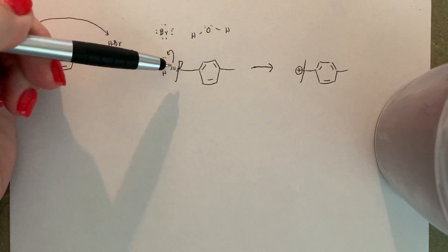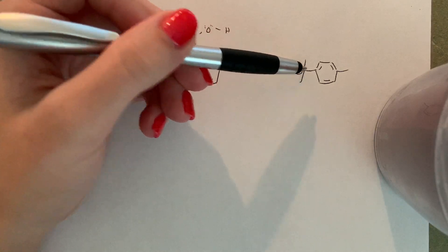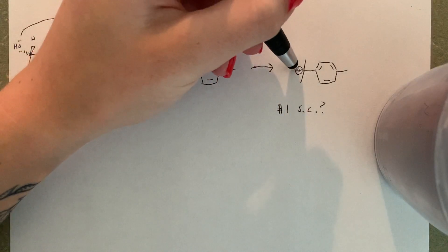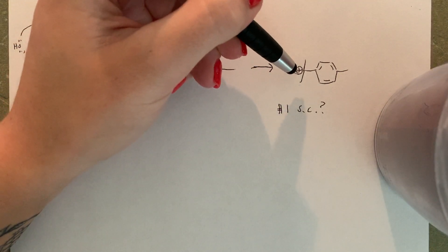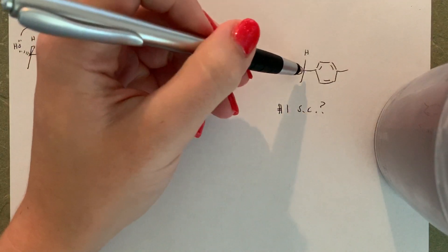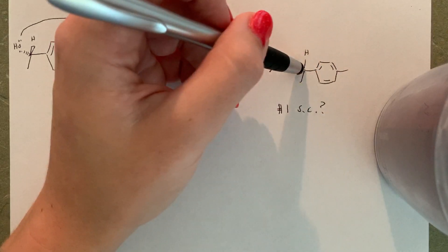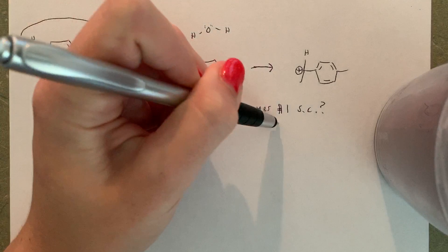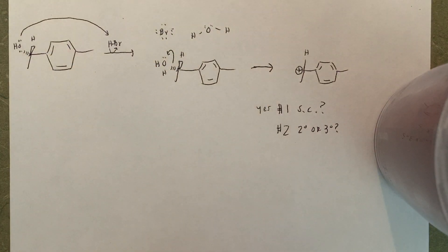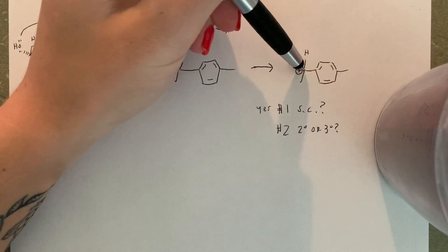It's important to notice that this carbon originally had a dash and a wedge, so when we add something here we need to ask: will we need a dash and a wedge? If I put the bromine here, will it make a stereocenter? Yes — we have hydrogen as one substituent, bromine as another, a methyl group, and the cyclohexane ring, so yes it will make a stereocenter. Is our carbocation secondary or tertiary? It has one hydrogen, one methyl group, and the cyclohexane — that makes it secondary.